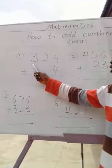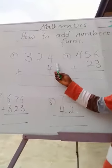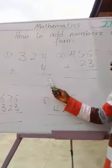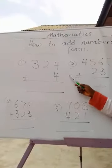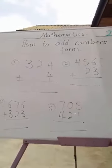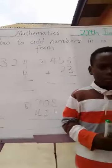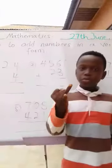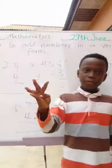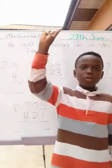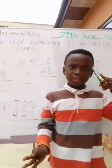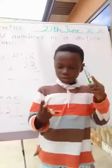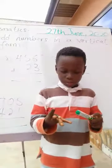remember: 324 plus 4. So, 4 and 4. 1, 2, 3, 4. So 4 is here and another number is in our mind. Let's continue.